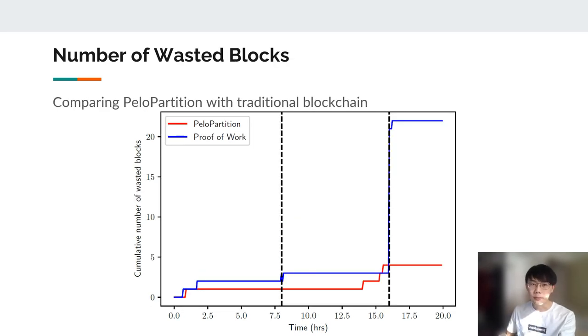Then we are going to compare the performance of PeloPartition with traditional blockchain like Bitcoin. The x-axis here is still the time series, but for the y-axis, we show the number of wasted blocks, which are blocks that are mined but not included in the main chain. The red line is PeloPartition. We can see few wasted blocks because some blocks are competing for the signing procedure, but there is no change when the network recovers. For Bitcoin, around 15 blocks are instantly wasted after the network recovers because all of the blocks from the shorter branches are dropped.